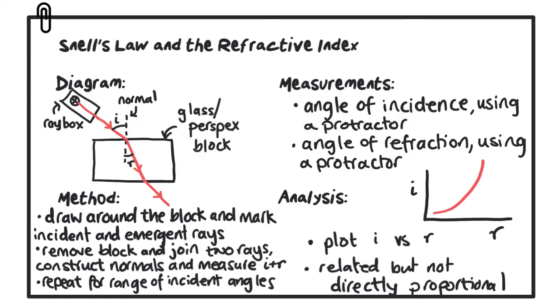If we then plot a graph of the angle of incidence against the angle of refraction, what we find is that there is indeed a relationship between the two. However, they are not directly proportional because it is not a straight line graph through the origin.